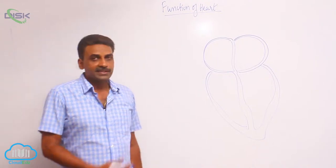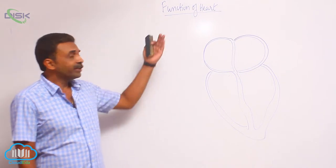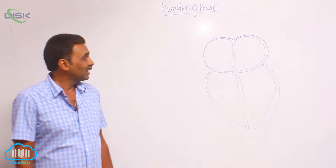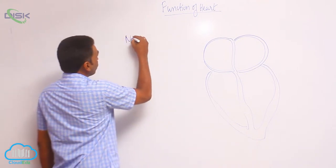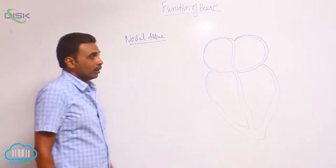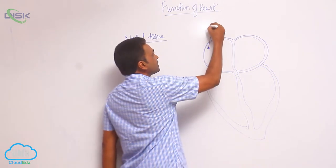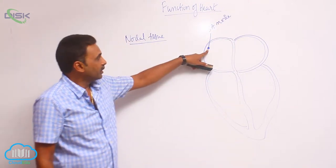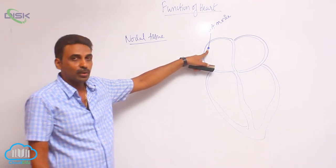In this class, we will discuss the functioning of the heart. Before we see how it is working, let us see the nodal tissue. Nodal tissue includes an SA node. It is called SA node or sinoatrial node.